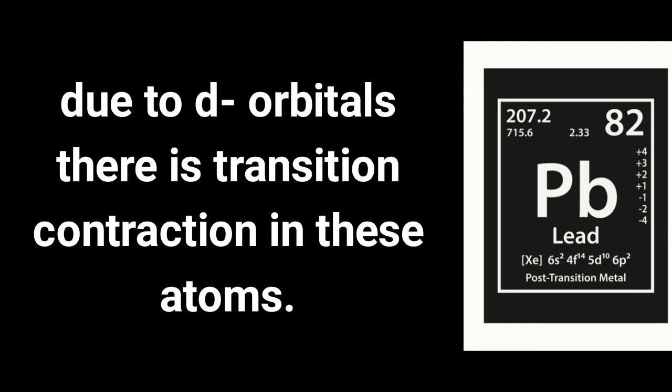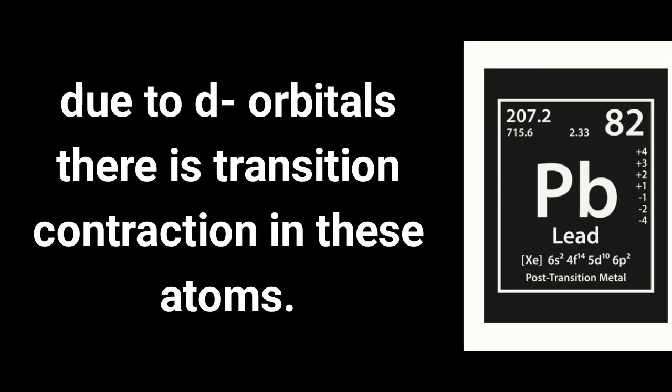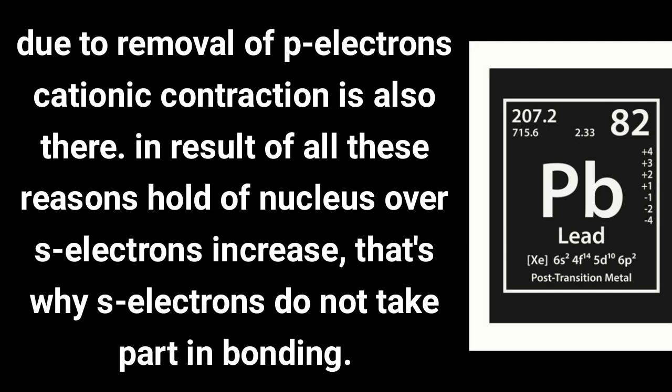Due to f orbitals, there is lanthanide contraction in these atoms. Due to d orbitals, there is transition contraction in these atoms. Due to removal of p electrons, cationic contraction is also present. As a result of all these reasons, the hold of the nucleus over s electrons increases — that is why s electrons do not take part in bonding, so they are called the inert pair, and hence the effect is called the inert pair effect.